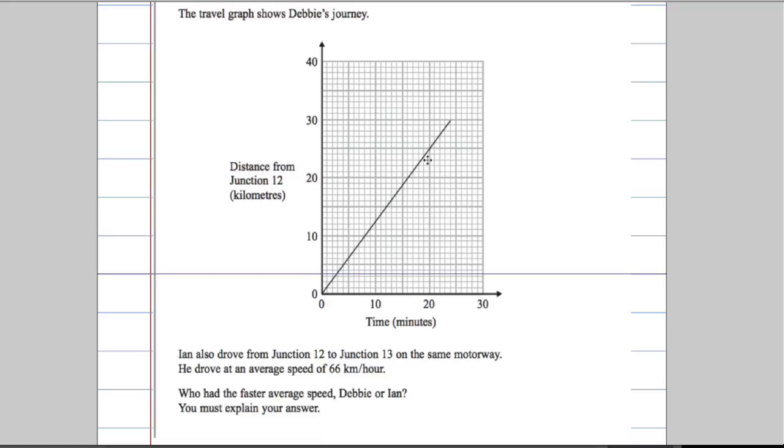So we can see Debbie's journey there clearly on the graph, and I'm told Ian's speed. Now if I wanted to know who was faster, I just need to work out what Debbie's speed was. So what I'm going to do is use the graph.